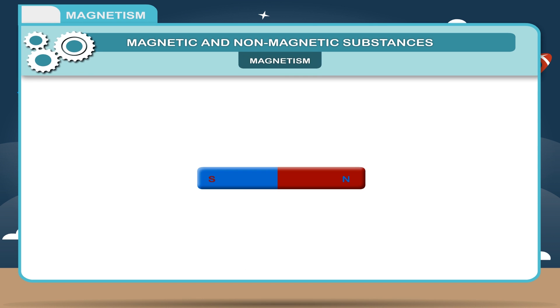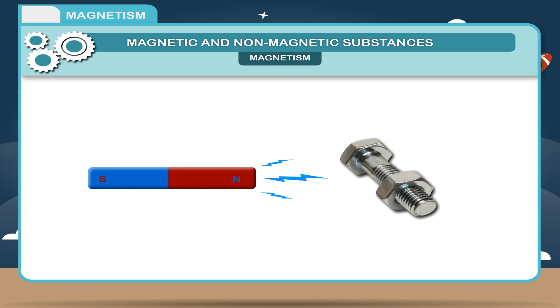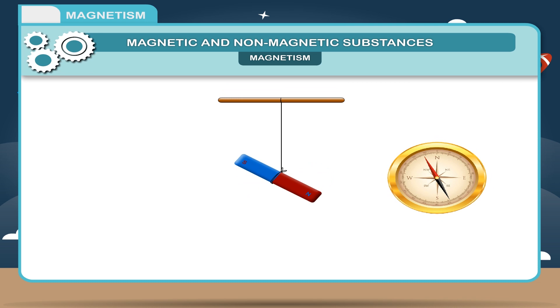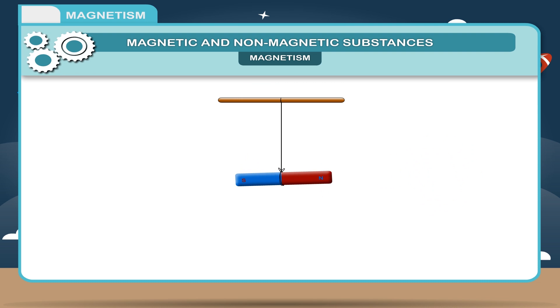Magnetism: The property by virtue of which a magnet attracts magnetic substances and comes to rest in the north-south direction when suspended freely by means of a thread at its center is called magnetism.